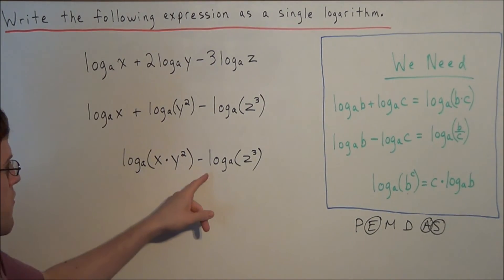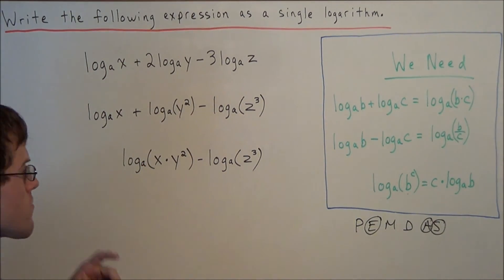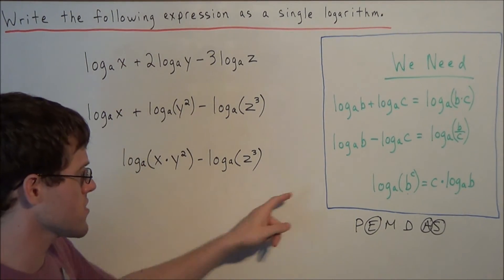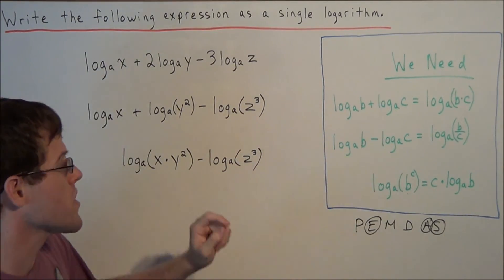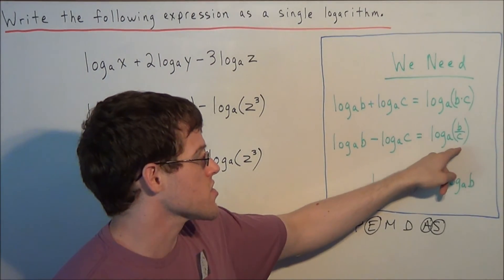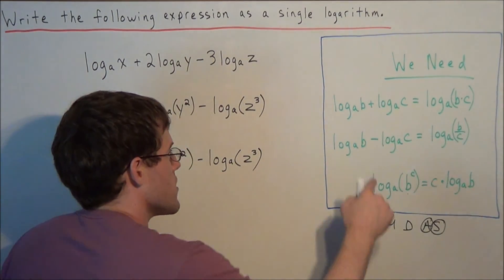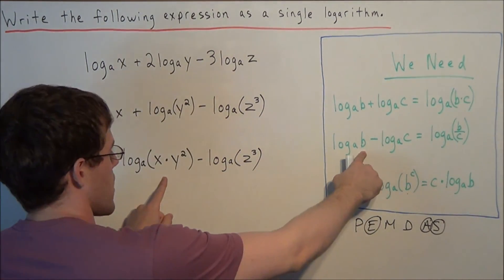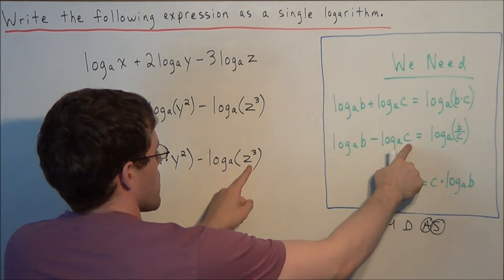So now we have one operation connecting them now. All we have left is to use the subtraction property. So to combine two logs with the same base attached by subtraction, we can set up a fraction inside of a single log. So the numerator of the fraction is the inner term of the first log, and the denominator of the fraction is the inner term of the second log.